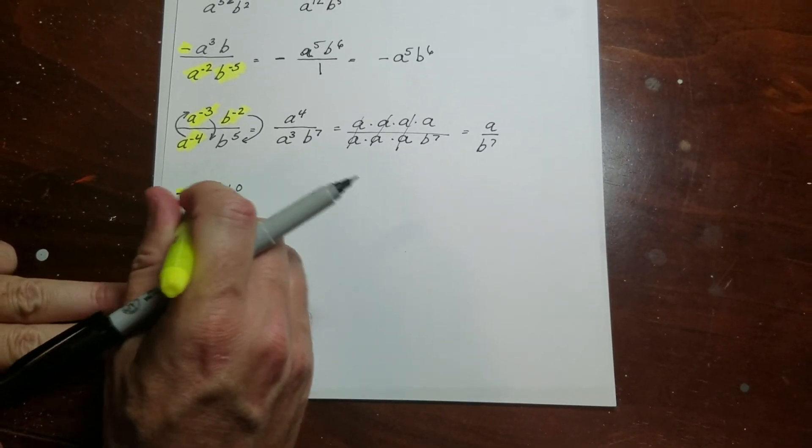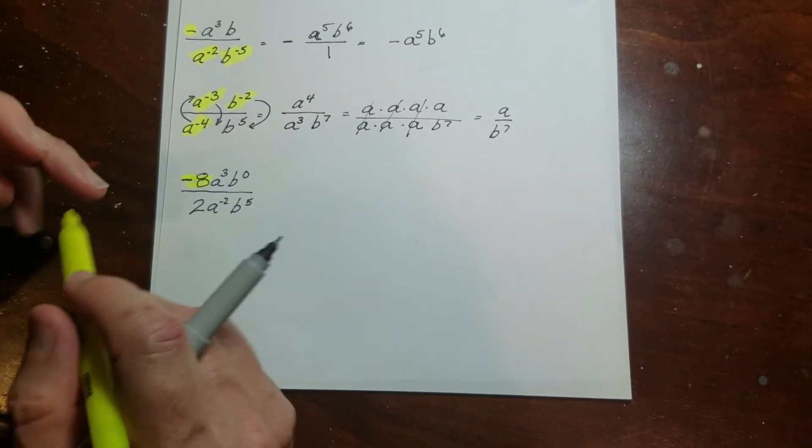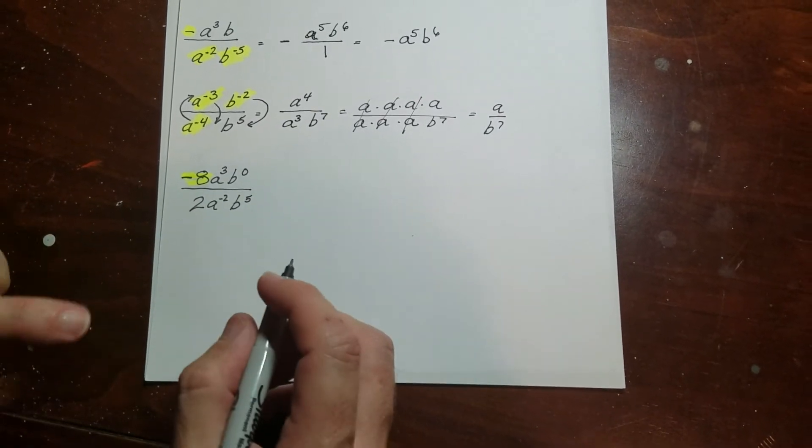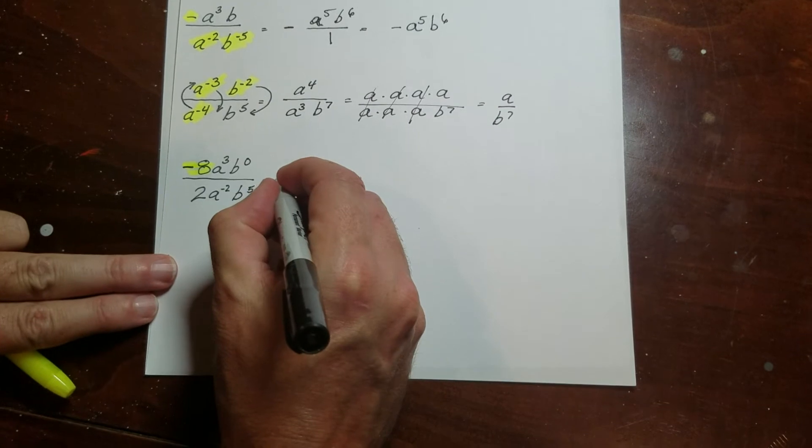Now, sometimes what will happen with all this negative movement is some people will say, oh, look, this negative 8 is negative, so I'm going to move it down here. That's a number. That's not a negative exponent. So make sure you know the difference between the two because negative numbers are just negative numbers.